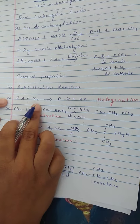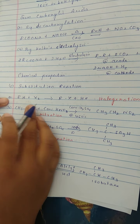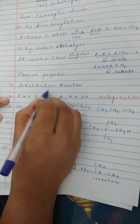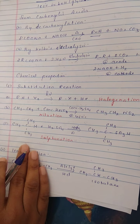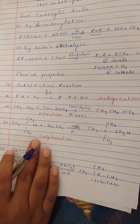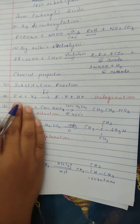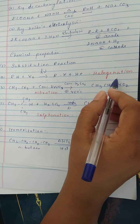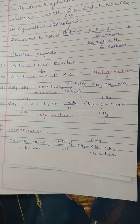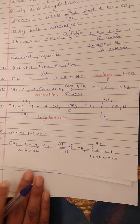Substitution — we have to do halogenation like Cl2, Br2, whatever it may. In presence of hν (UV light), it is poly-substituted; in controlled condition we get the respective monohalogenated alkane — alkyl halide. So halogenation — chlorination, bromination — whatever you may have to do. Generally these are all free-radical substitution reactions. Electrophilic addition is only going to happen in alkenes.